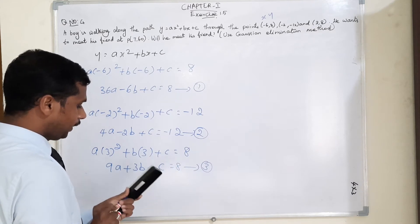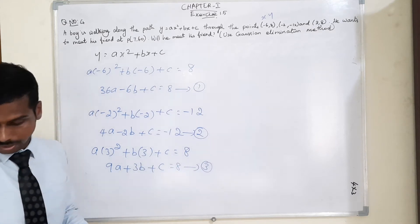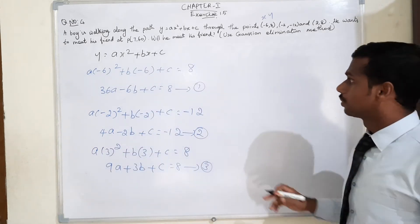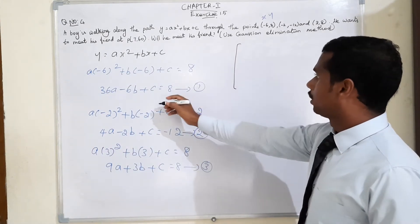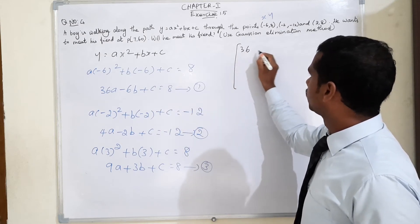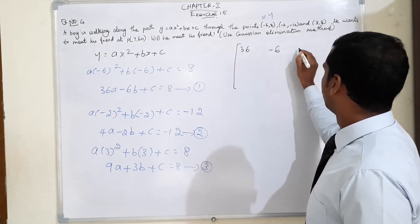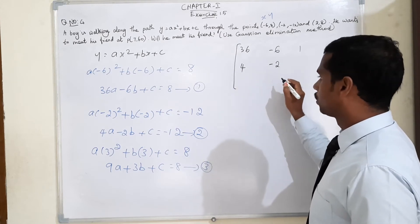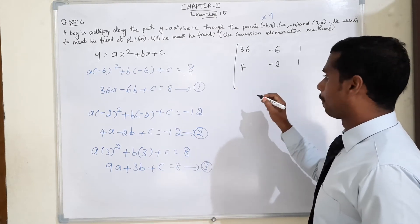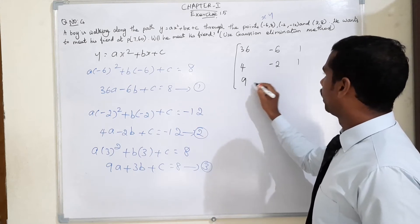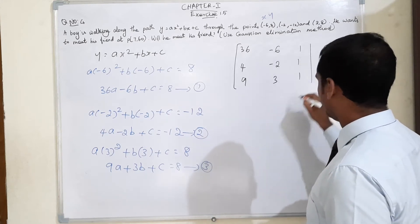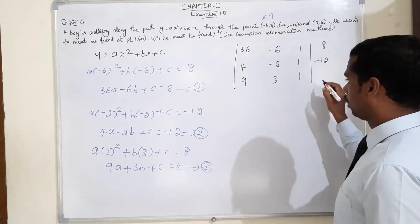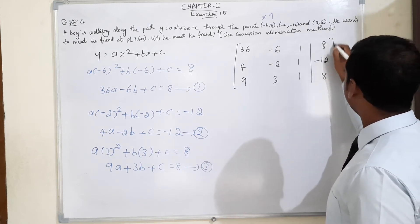Now each and every term we should be writing in augmented form. The augmented matrix: first row is 36, -6, 1; second row is 4, -2, 1; third row is 9, 3, 1. Constants are 8, -12, and positive 8.